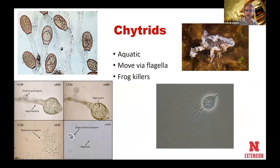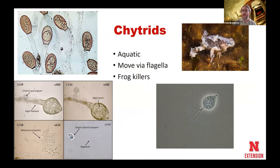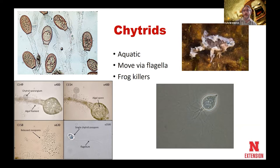We're going to quickly go through the different groups of fungi. One group that we deal with the least are the chytrids. Chytrids tend to be mainly aquatic — they have flagella and will kind of swim. A lot of chytrids can be pathogens as well, such as pathogens of algae. But unfortunately, one of the most damaging things chytrids do is that certain chytrids are very pathogenic to amphibians, especially frogs. There is a lot of frog death occurring due to infection with these chytrids.